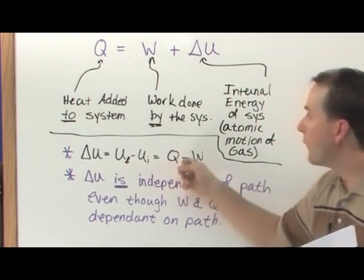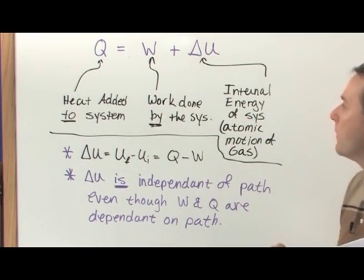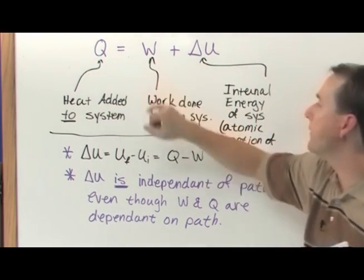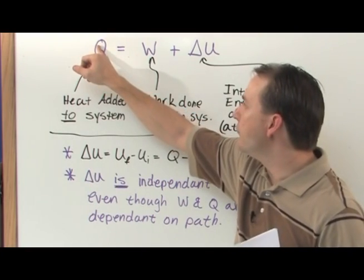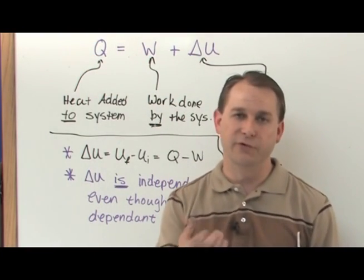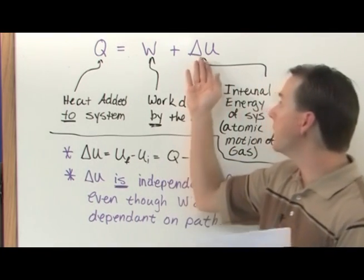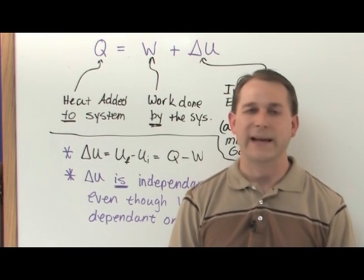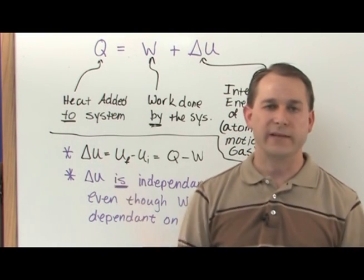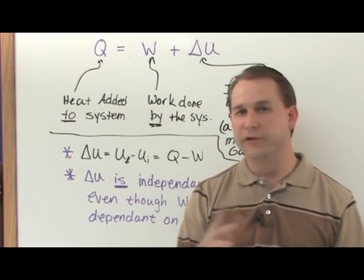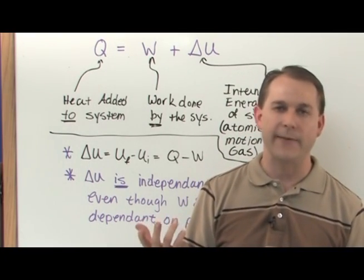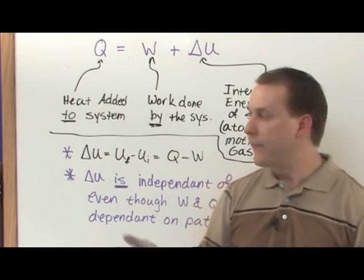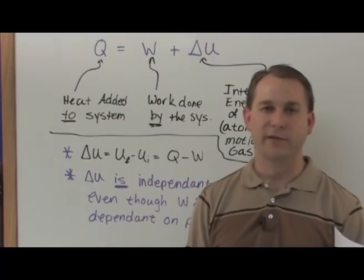This is why the first law of thermodynamics is really so important because it relates the state variable of the system to things that we're doing on the outside. We can see the energy going in. We can see the work being done. We can calculate the intrinsic state of the system, at least one of the state variables of the system. That's the delta U there. So it's really important. I guarantee it will be asked that on your test. What is the state variable? Which of these variables are independent of path? Which one are dependent of path? Basically the heat and the work going to be dependent upon the path. Internal energy, never dependent upon the path. And that's just the way it is.